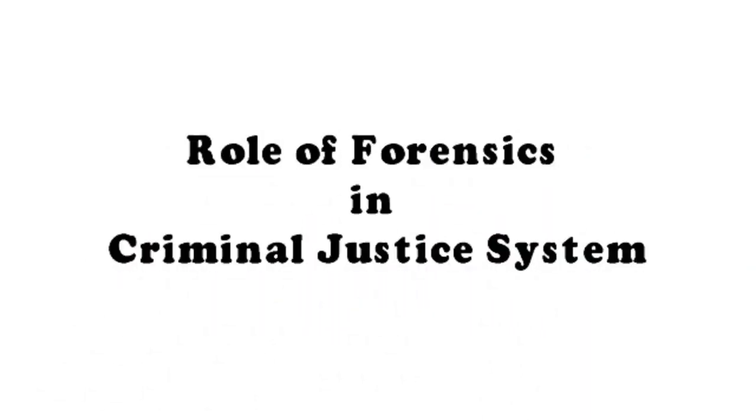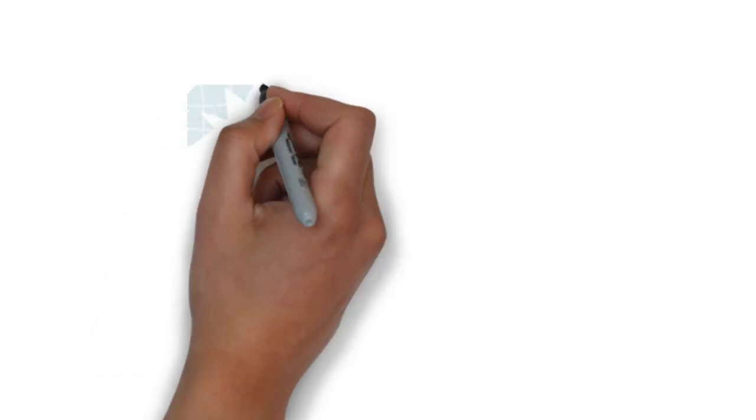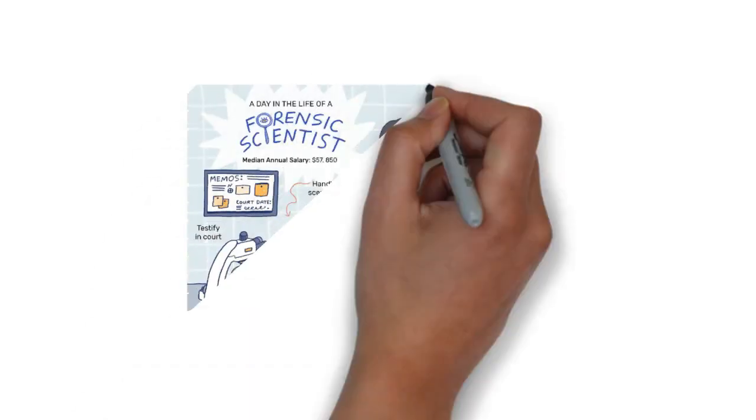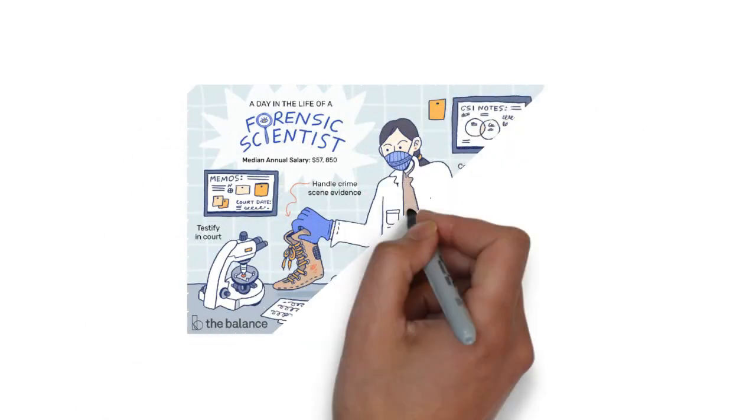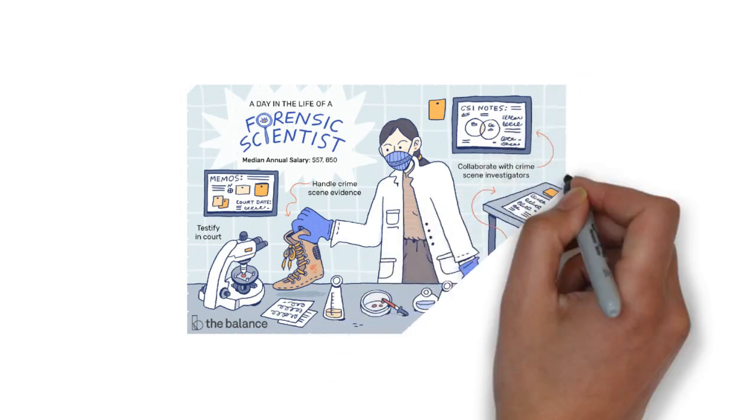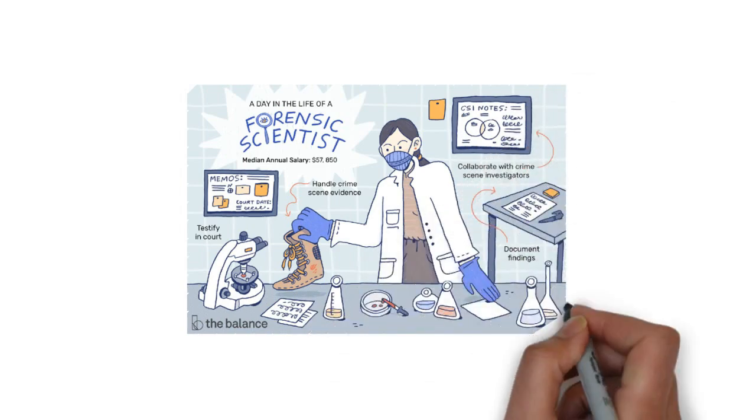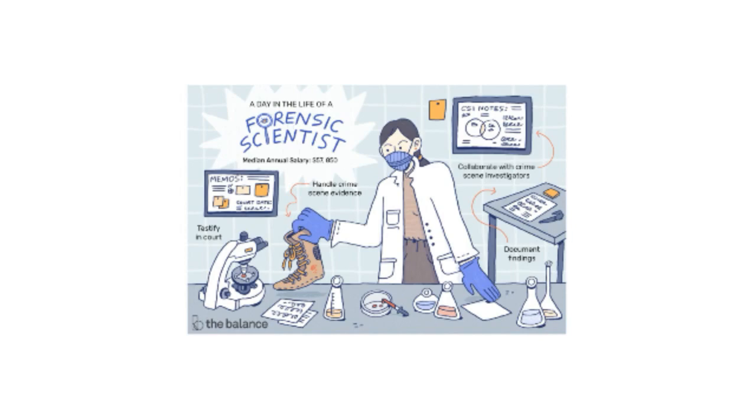Coming to the role of forensics in criminal justice system, it exists in the investigation part. It deals with the analysis of evidences collected from crime scene and establishes facts admissible in the court of law.